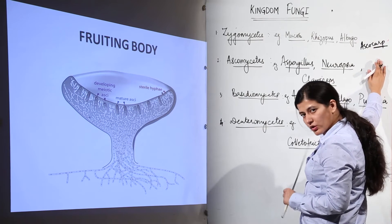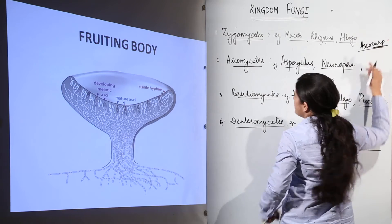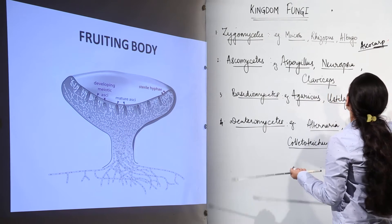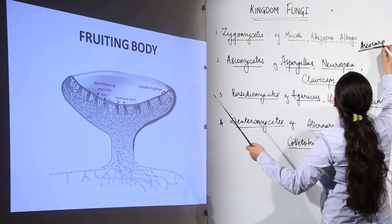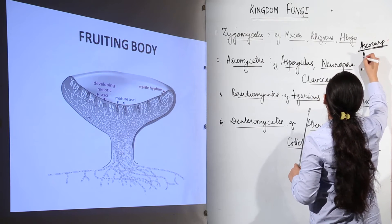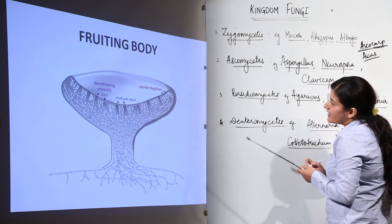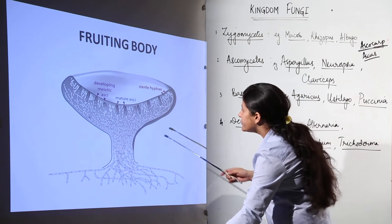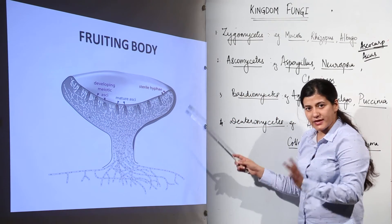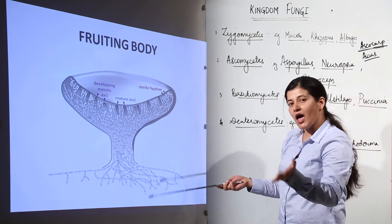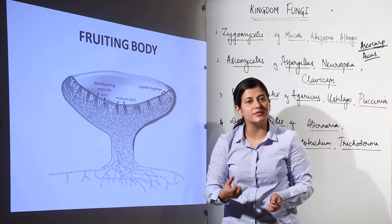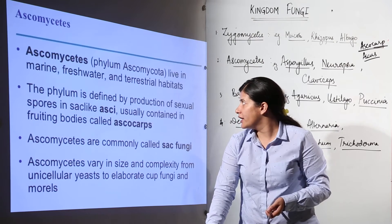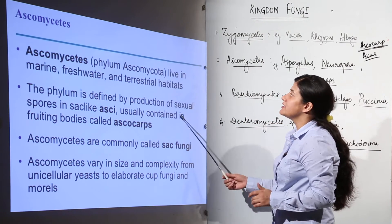The asco cup is somewhat like a cup for toasting wine or drinks. Inside the asco cup we have ascus, which are sac-like structures containing eight ascospores. So: asco cups contain ascus, ascus contain ascospores, and ascospores are haploid meiotic spores which germinate and give rise to new fungal mycelia.